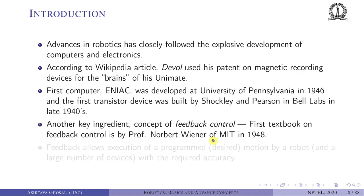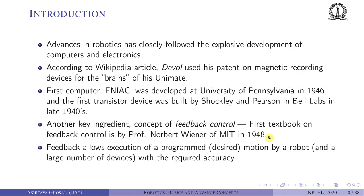Another key ingredient in the history of robotics is feedback control. The first textbook on feedback control was written by Professor Norbert Wiener of MIT in 1948. Feedback allows execution of a desired motion by a robot with required accuracy. For example, if you want a robot to perform welding, the feedback system ensures it performs the desired motion accurately rather than welding in the wrong place.